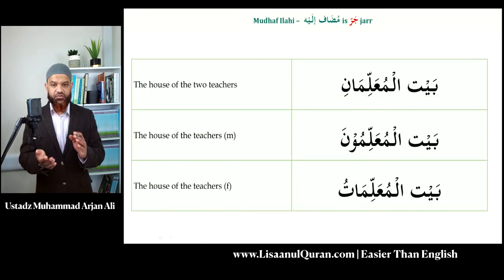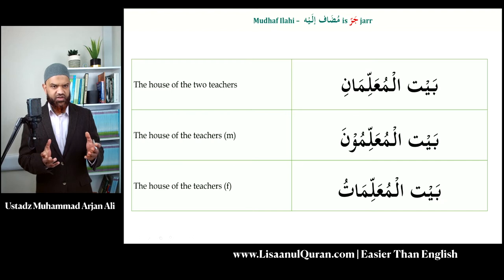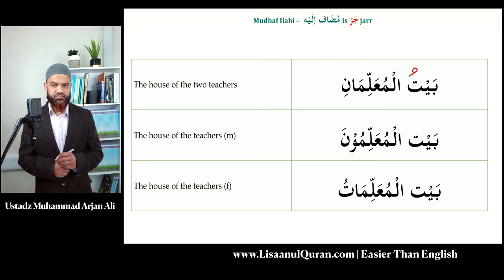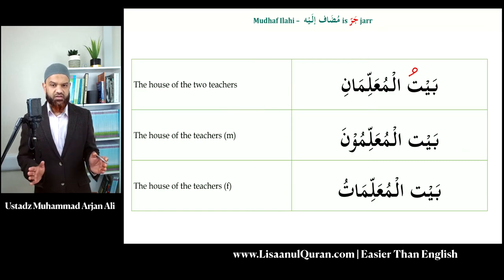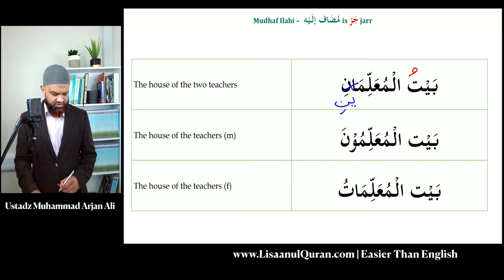Now we have three more constructs: 'the house of the two teachers,' 'the house of the teachers' (three or more), and 'the house of the female teachers.' For 'two teachers' in Arabic we use the dual: muallimani is rafa, so it cannot be used as mudaf ilaihi without changing. We need the jar version: muallimayni becomes muallimayni — so the correct form is baytul muallimayni.